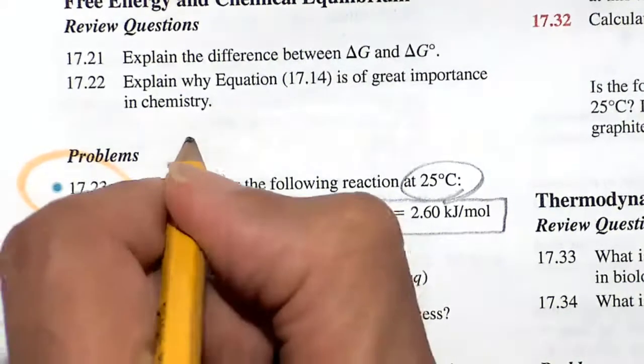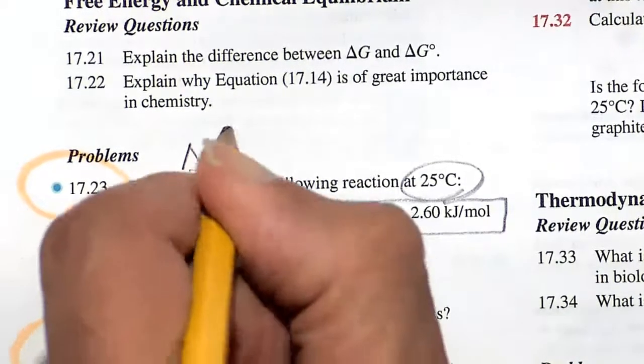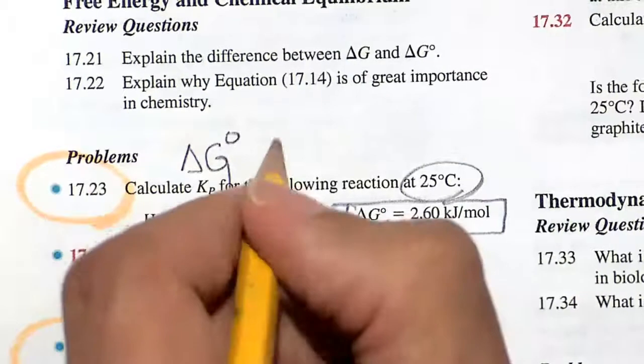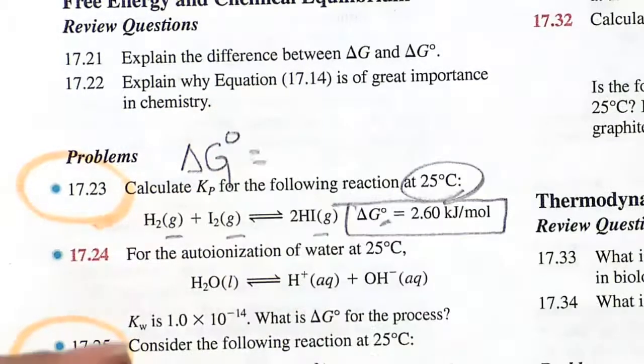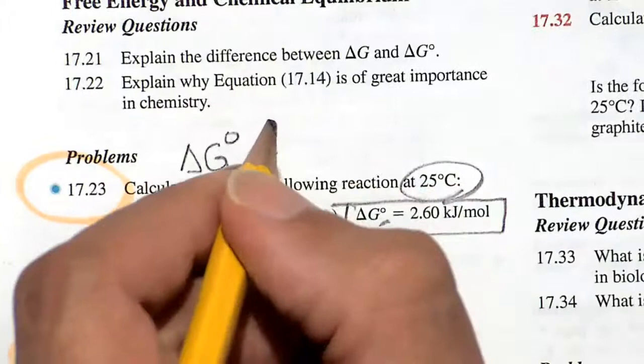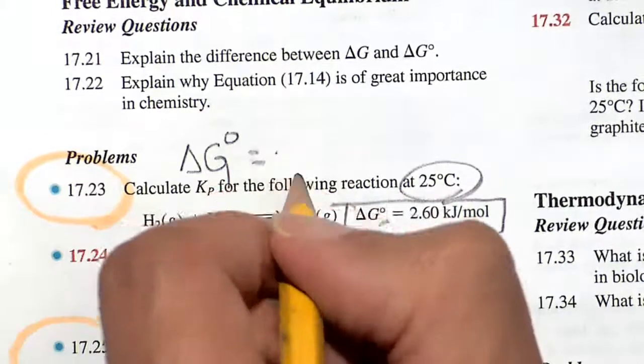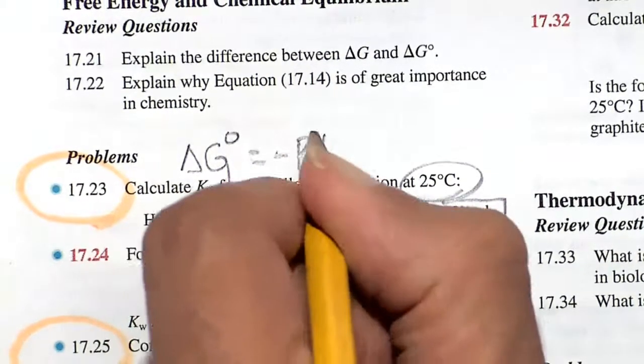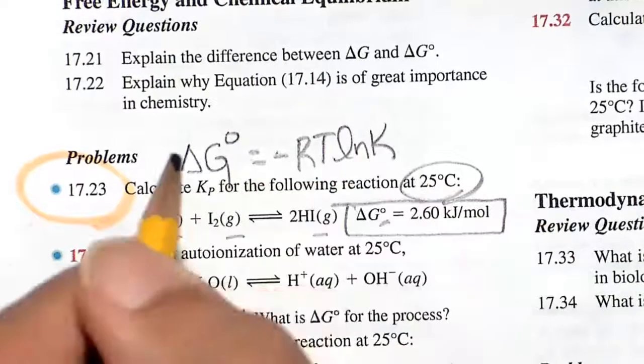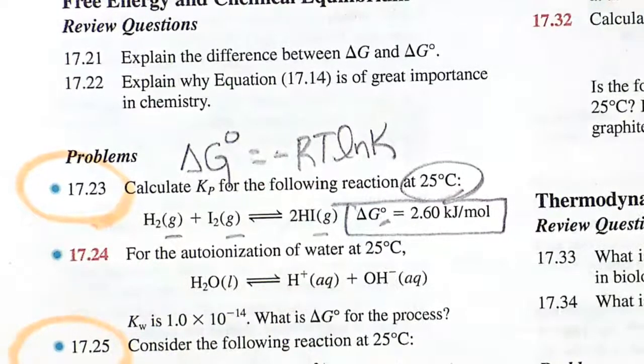So the equation that helps us solve this problem is delta G standard state. If it's not at standard state, it's a totally different equation, actually called the NERF equation, but we're at standard state. So we will use this equation, minus RT natural log of K.